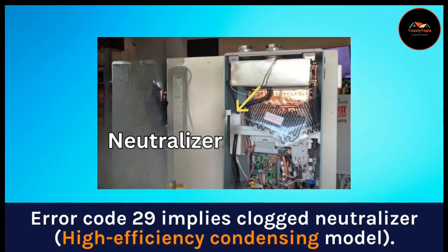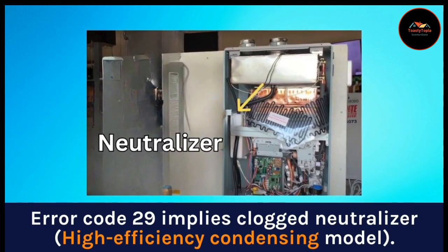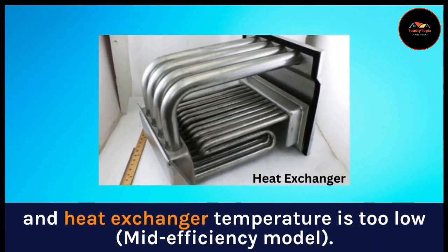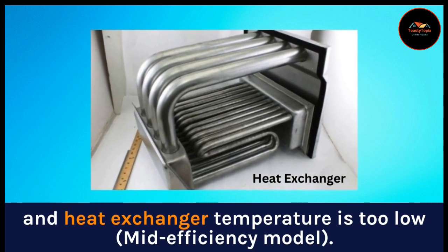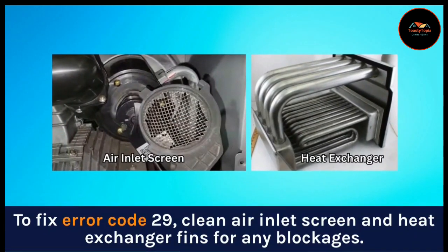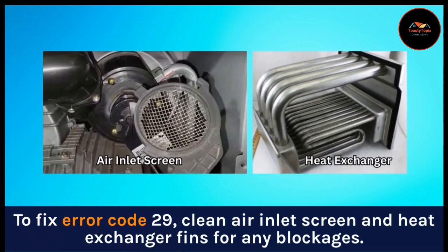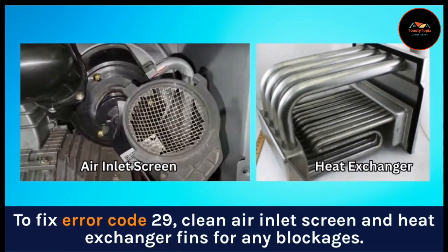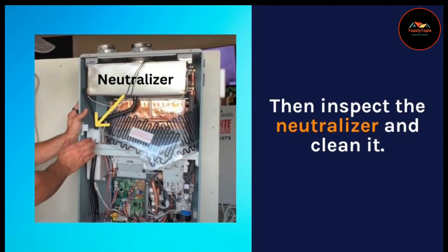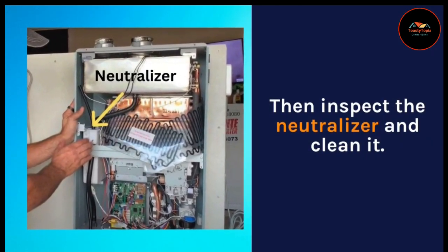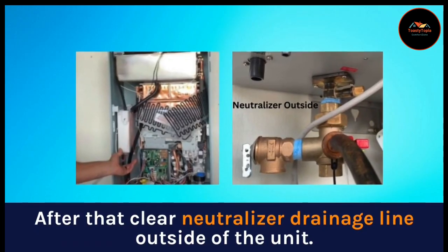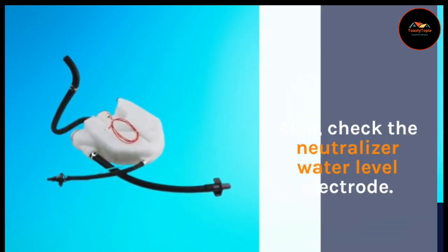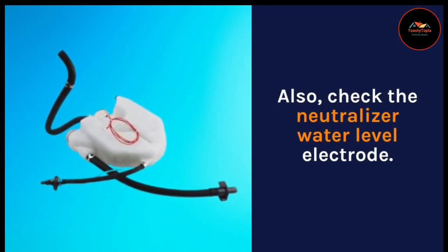Error code 29 implies a clogged neutralizer on the high-efficiency condensing model, and heat exchanger temperature too low on the mid-efficiency model. To fix error code 29, clean the air inlet screen and heat exchanger fins for any blockages. Then inspect and clean the neutralizer, clear the neutralizer drainage line outside the unit, and check the neutralizer water level electrode.